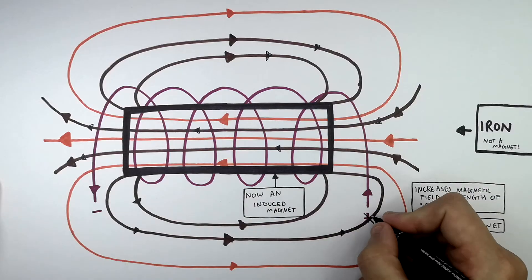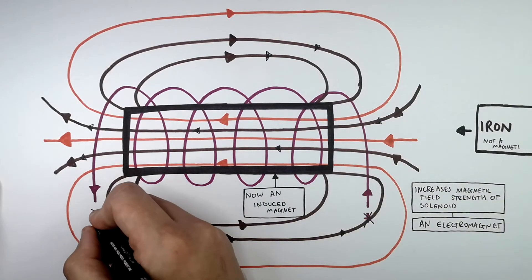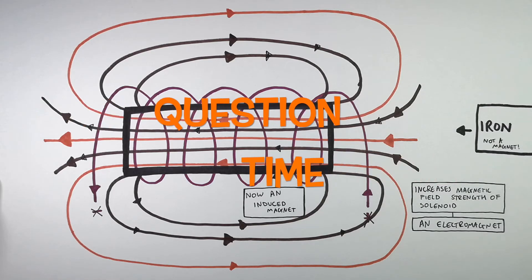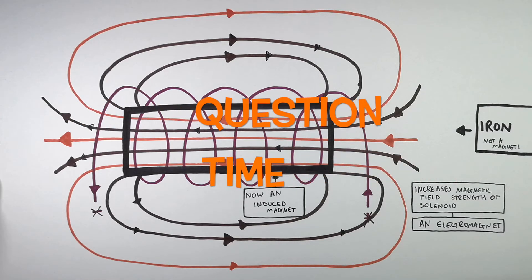So what happens if you switch off the solenoid? If you have zero current running through the solenoid wires? It's question time. Attempt these questions to check your understanding.